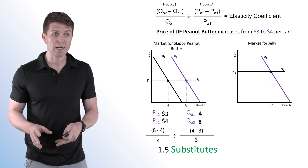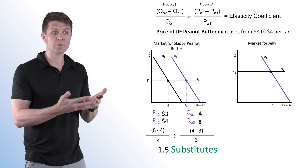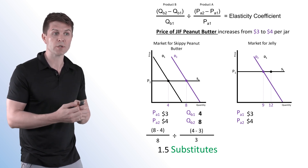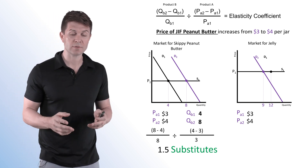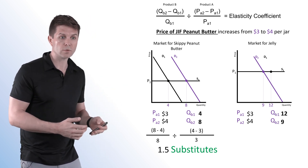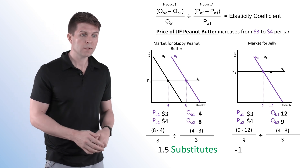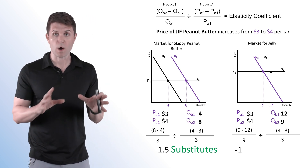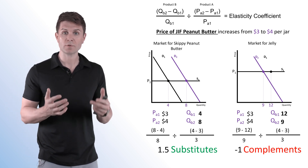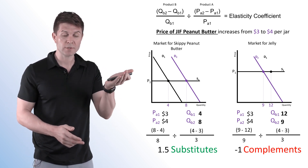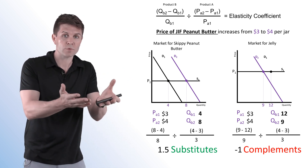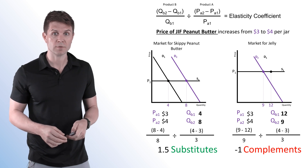When we look at the market for jelly, that increase in the price of Jif peanut butter causes demand to decrease for jelly. This decrease in demand causes quantity demanded to be lower — we go from 12 to 9. When we plug this into the formula, it ends up being a negative one coefficient. Because we have a negative coefficient, it means that the two goods are complements. A price increase in one causes a quantity demanded decrease in the other, resulting in that negative coefficient.